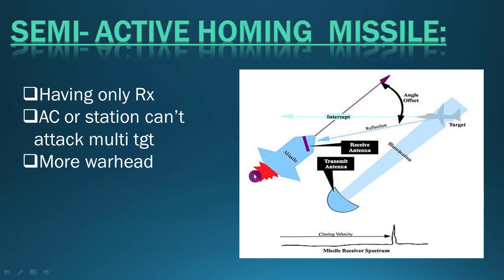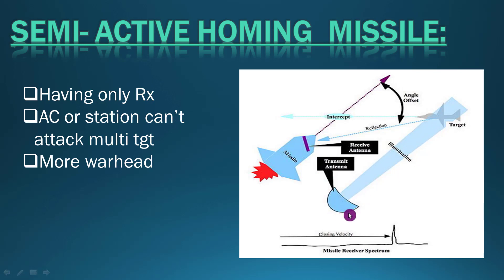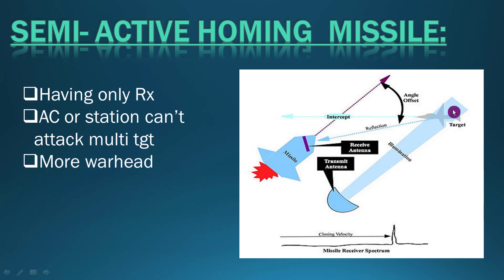Semi-active homing missiles have only a receiving part. An external radiation source, like an aircraft or a radar station, throws a radar beam onto the target. The radar beam reflects off the target back to the missile, and the missile finds the target and hits it. So the missile only has the receiving component and tracks the reflected radar beam.